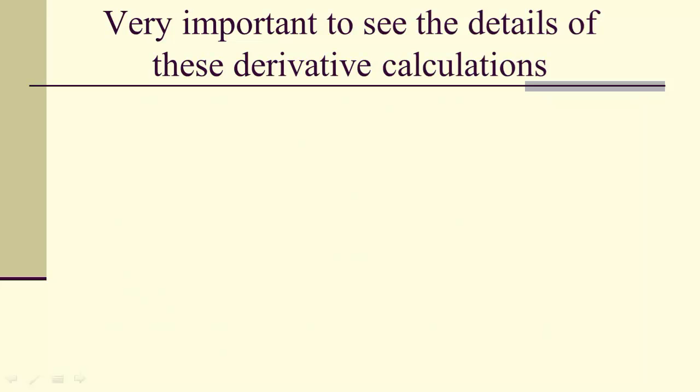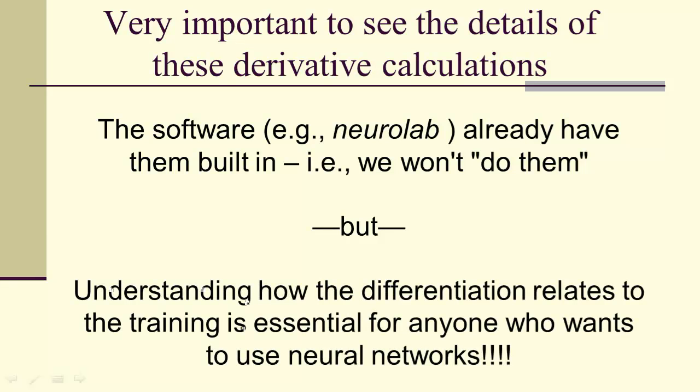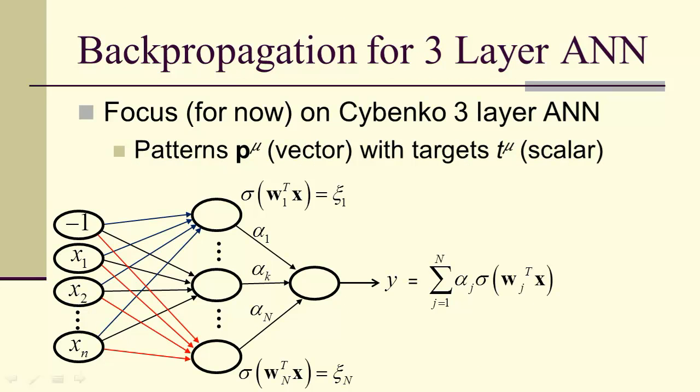We're going to actually do the details of these derivative calculations, not because we have to actually implement them. The software already has them all built in. However, we have to understand how the differentiation relates to the training, because anyone who wants to work with neural networks needs to understand what's called the vanishing gradient problem. So we're going to restrict our attention to backpropagation for a three layer artificial neural network with one output.